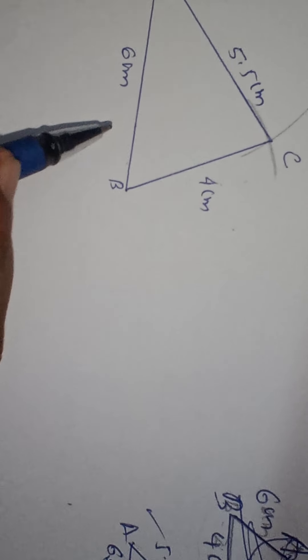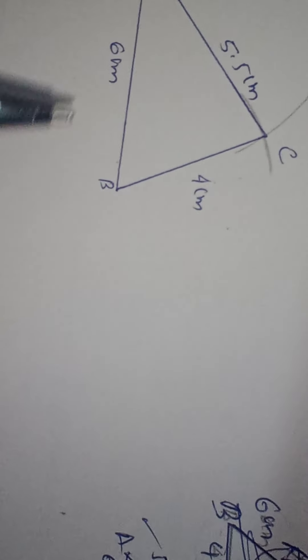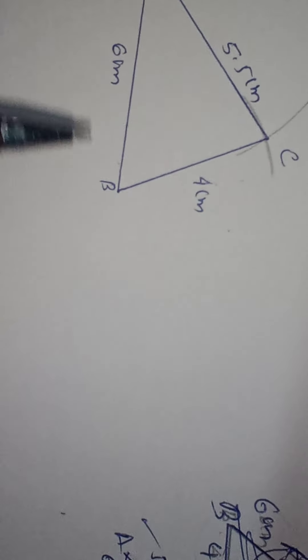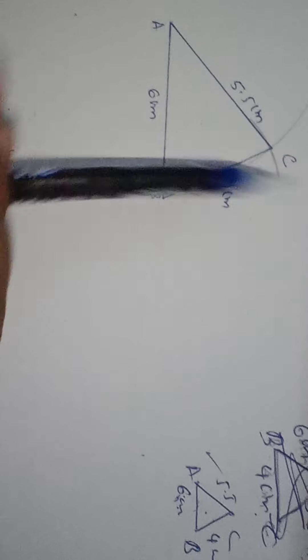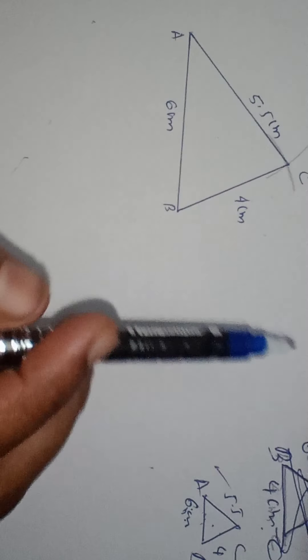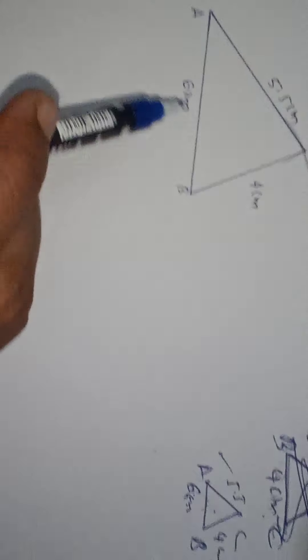Write the measures in the figure and write all the labels. If a name is not given, you can give your own. This is the first question in exercise 15C. First draw the rough figure, then using the rough figure draw the actual figure. Use scale and pencil only — I used a pen so the lines are visible in the video, but never use a pen to draw figures in geometry.